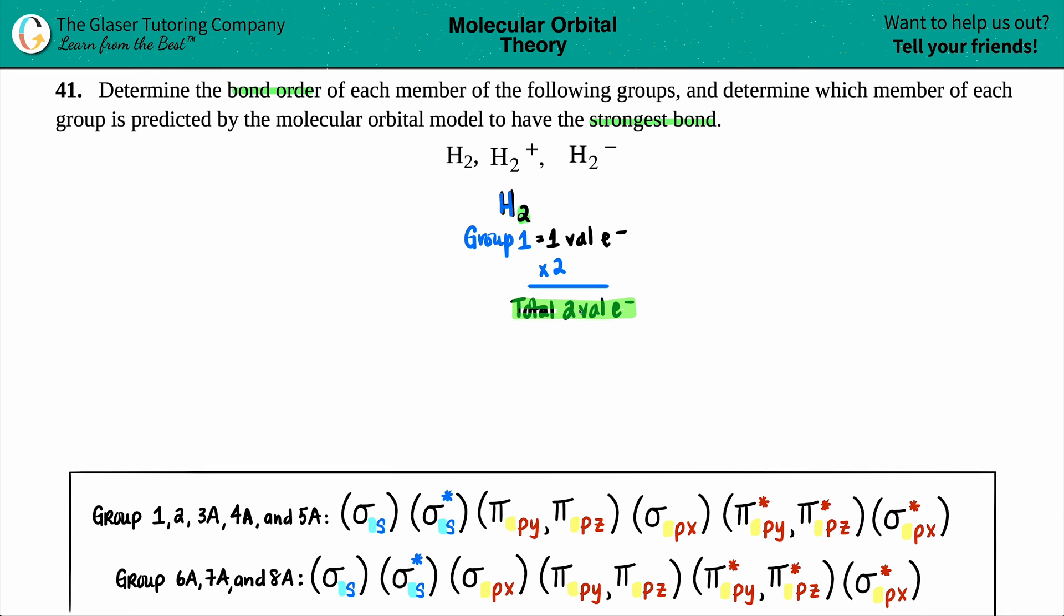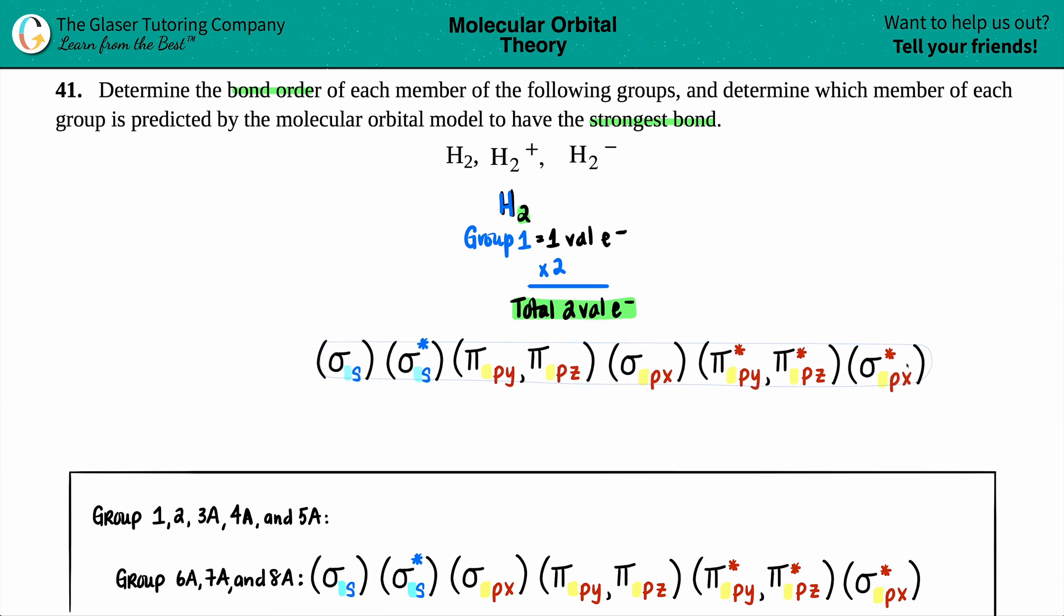So now the next thing that we're going to do is figure out which one of these two templates are we going to be using for H2. So it goes by the group number. Since we did say that we were in group one, we are going to pick the group one's general template. The reason between these two molecular configurations is due to SP mixing. Some elements have a different configuration. But for groups one, two, three A, four A, and five A, we'll choose this one.